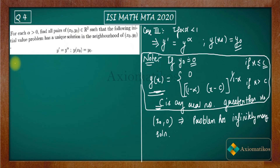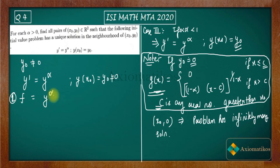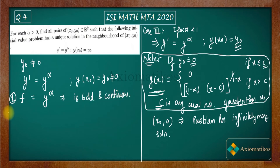Now let's check when y₀ is non-zero. We have y' = y^α with y(x₀) = y₀ ≠ 0. Here f(x,y) = y^α, and because alpha ∈ (0,1), the function is bounded and continuous — it's a nice-looking function.